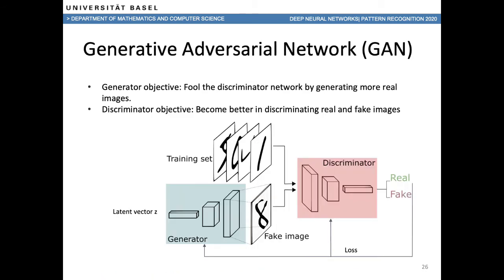To address the blurriness of variational autoencoders, we have generative adversarial networks, or GANs, which have become really popular in the last few years. The main idea is a two-network setup: a generator, whose objective is to fool the discriminator network by generating more realistic images, and a discriminator network, which becomes better at discriminating real from fake images. Essentially, GANs learn a really good loss function in the discriminator, rather than manually defining one to quantify similarity between input and output images.